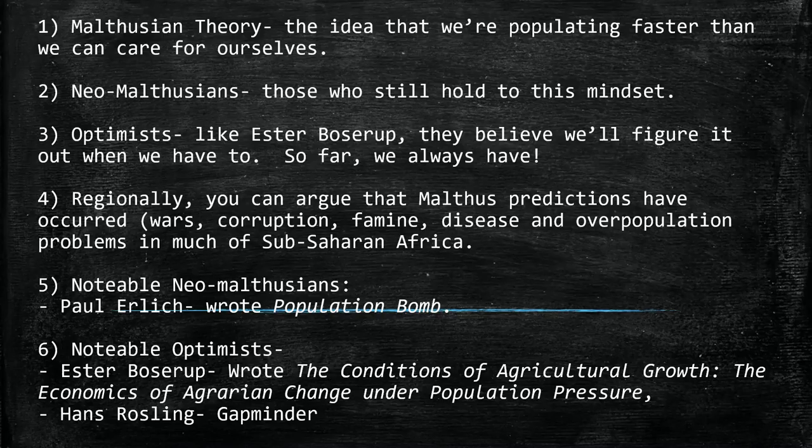Neo-Malthusians would say we're growing in an unbridled, unnatural fashion and we might be causing more problems than we're aware of. Some countries like China have enacted one-child policies, showing that governments can have some degree of say over birth rates. On the other end, many European countries actually give incentives for people to have children, because population growth in those countries has slowed or stalled.